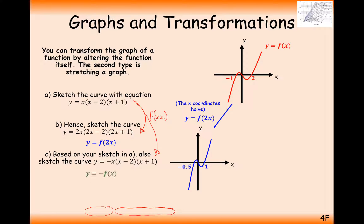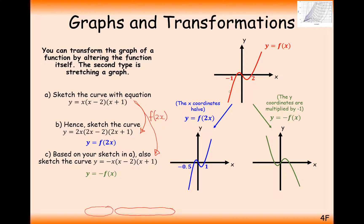All of those y-coordinates are now going to be the negative value of what they were before. For example, a negative point is now going to be positive, and if we originally have a point up here at 5, then the negative of that is now minus 5. So we've reflected it in the x-axis.